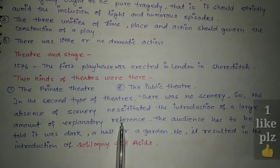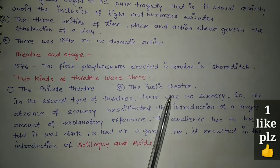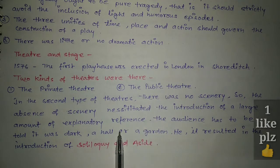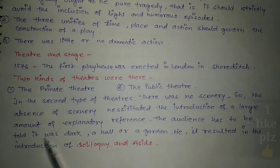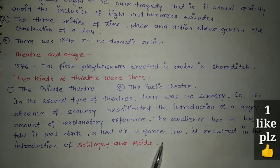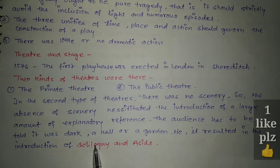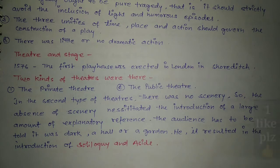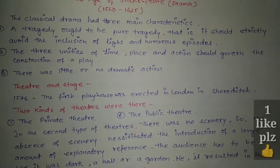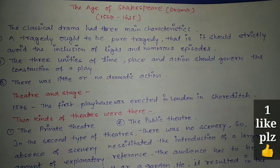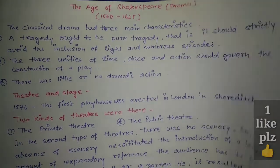In the public theater there were no facilities, so actors used to tell the audience if it was dark, or set in a hall or a garden. This resulted in the introduction of soliloquy and asides — that's why soliloquy and asides came into existence. This was about theater and stage in the Age of Shakespeare.